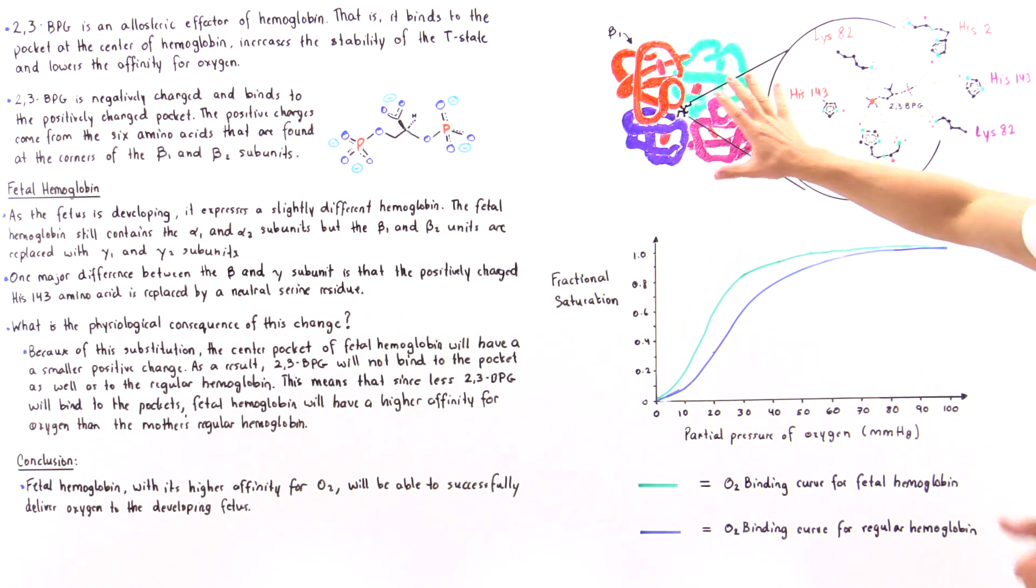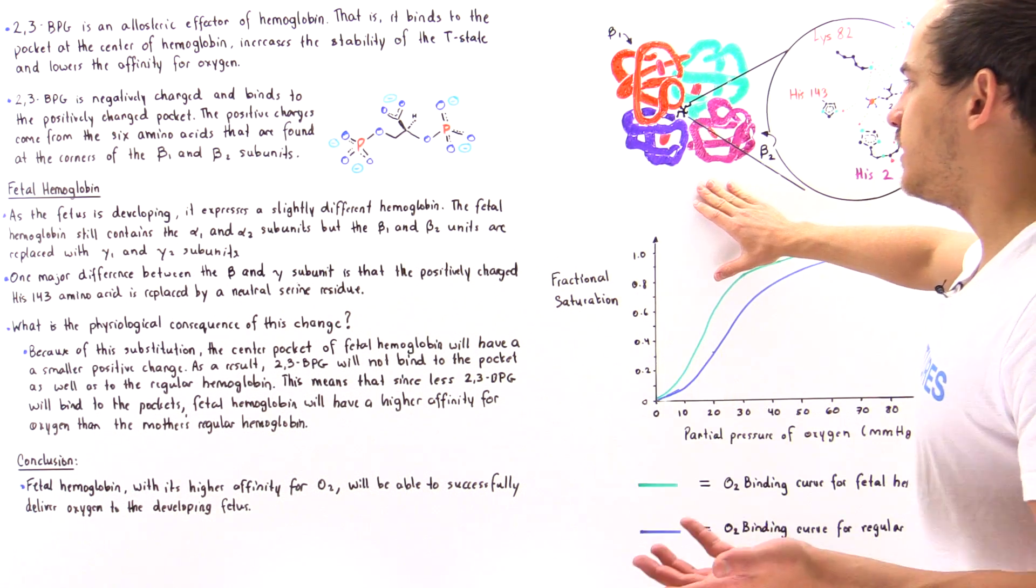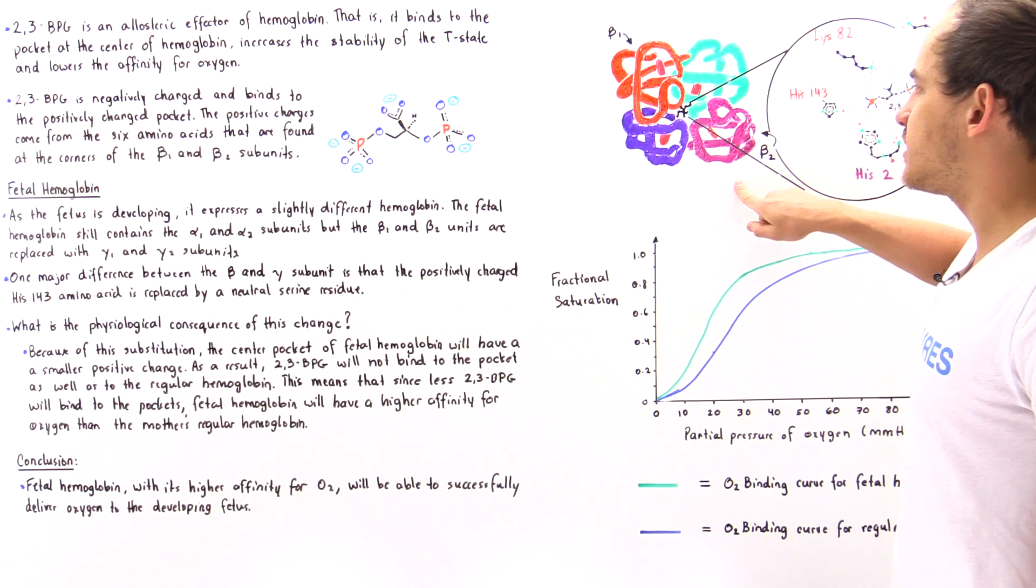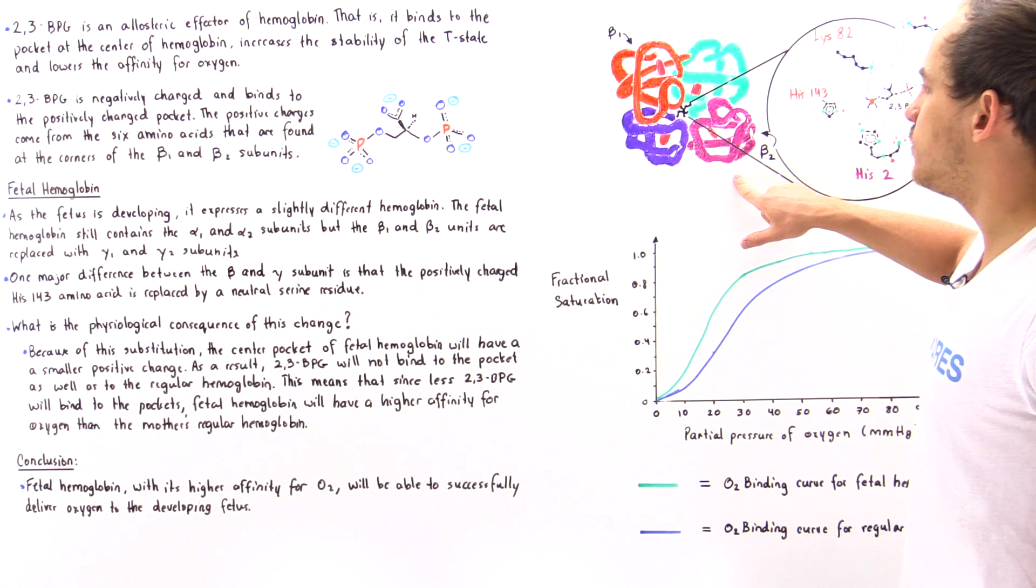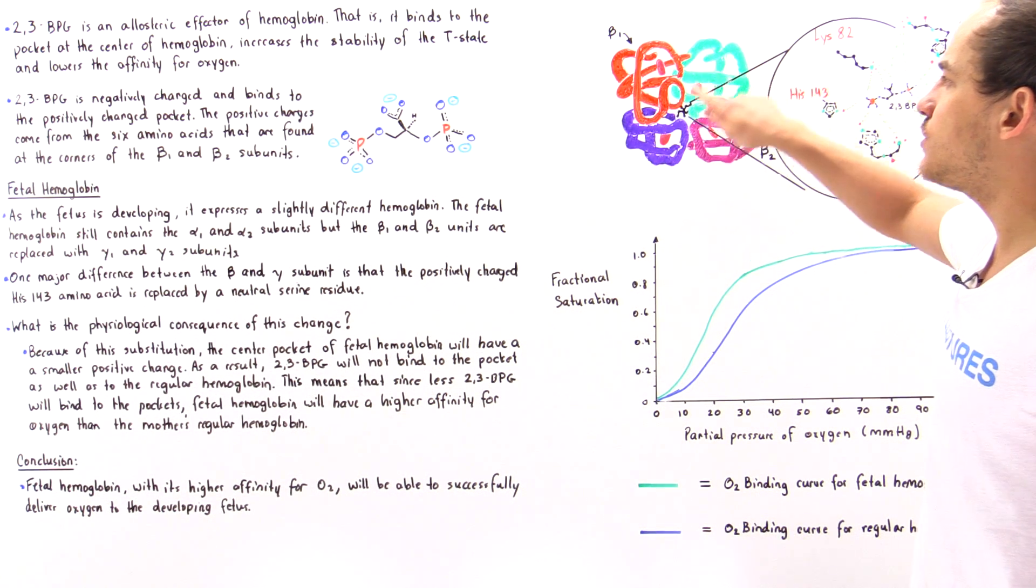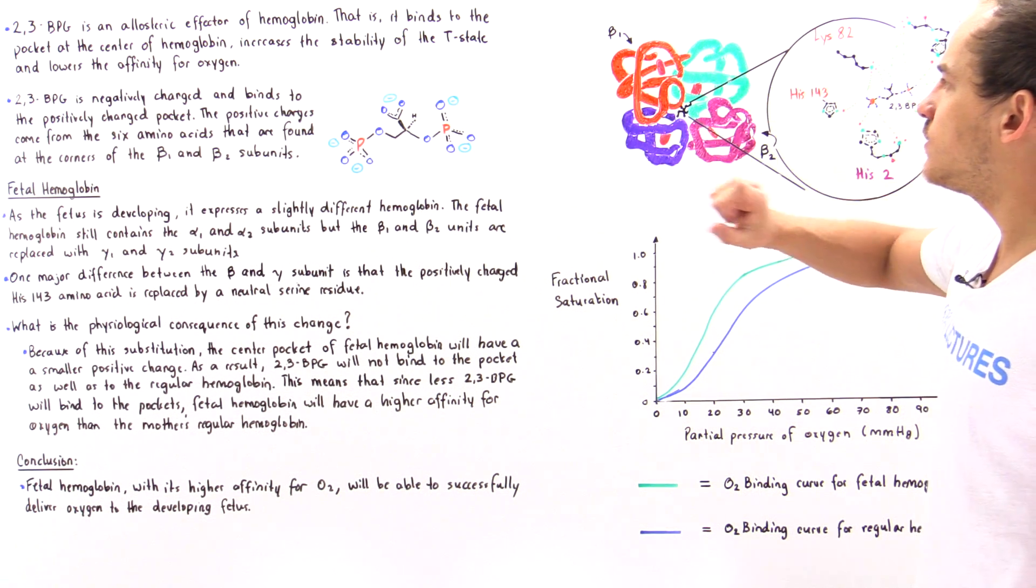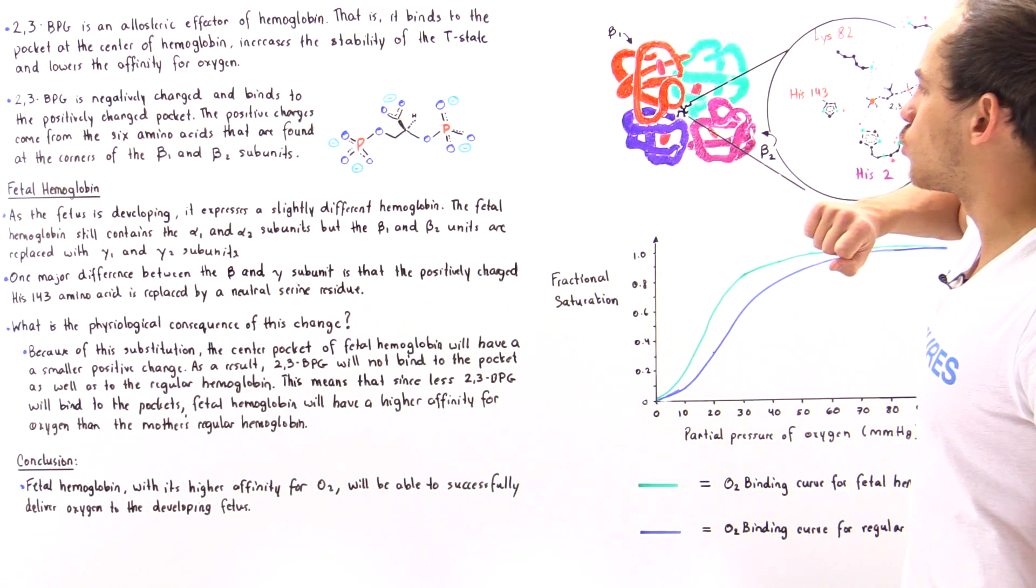Let's take a look at the following diagram, which we spoke about in the previous lecture. This is our normal hemoglobin. Hemoglobin contains the beta-1 and beta-2 subunits, as well as these two alpha subunits. At the center of these individual subunits are the heme groups.